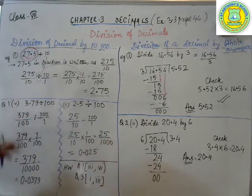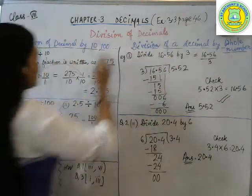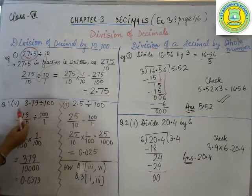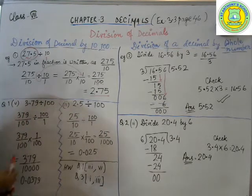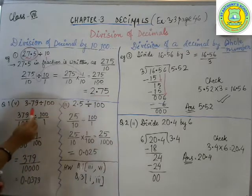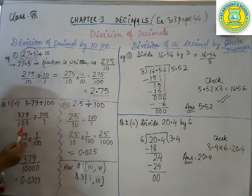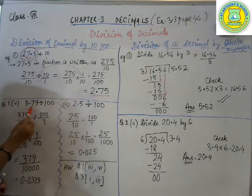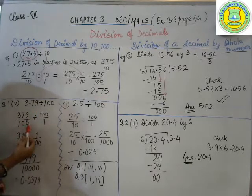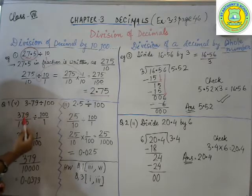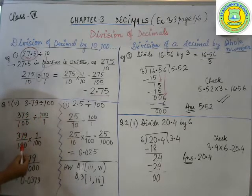See, one question I am taking from your exercise 3.3, page 46, question number 1, subpart 5, is saying 3.79 divided by 100. Now I am not writing everything, I am not explaining. 3.79 in fractions will be, first you will write 379 by 1. Now here how many digits after the decimal? Two digits after the decimal. So 1 will have two zeros. So the number will be 379 by 100 divided by 100 by 1.